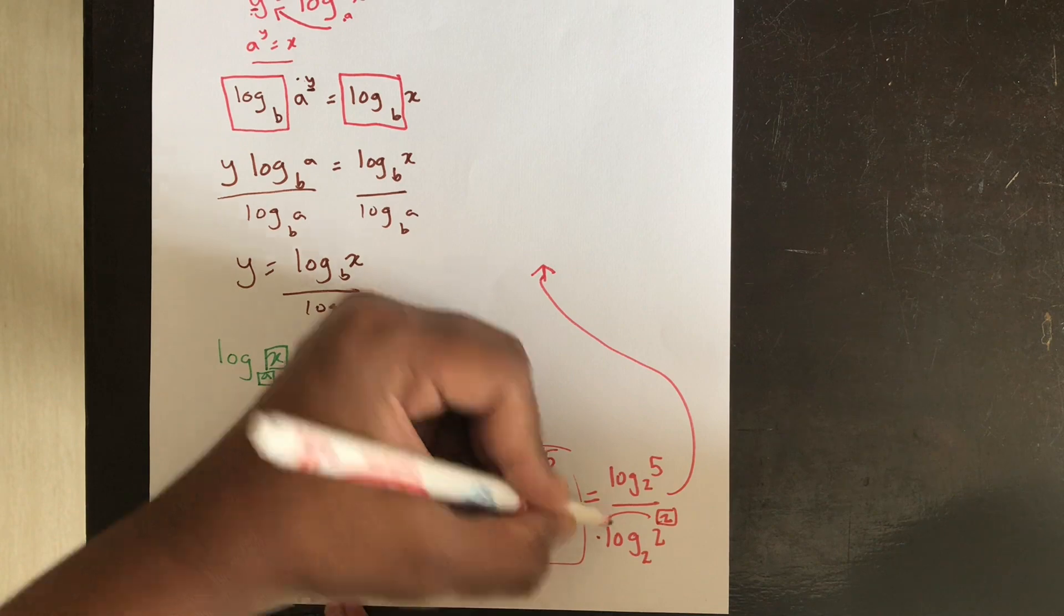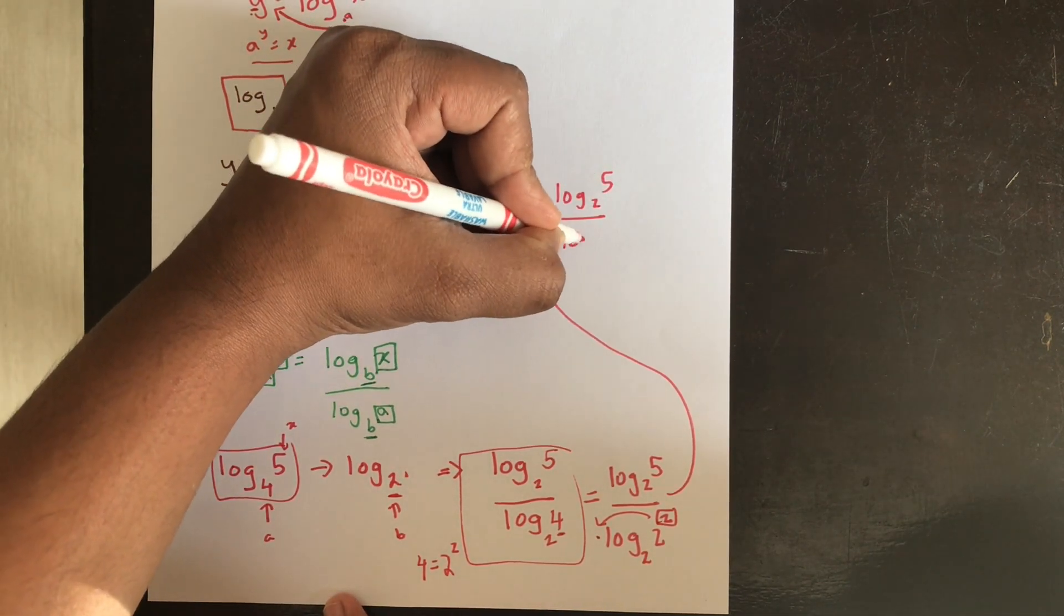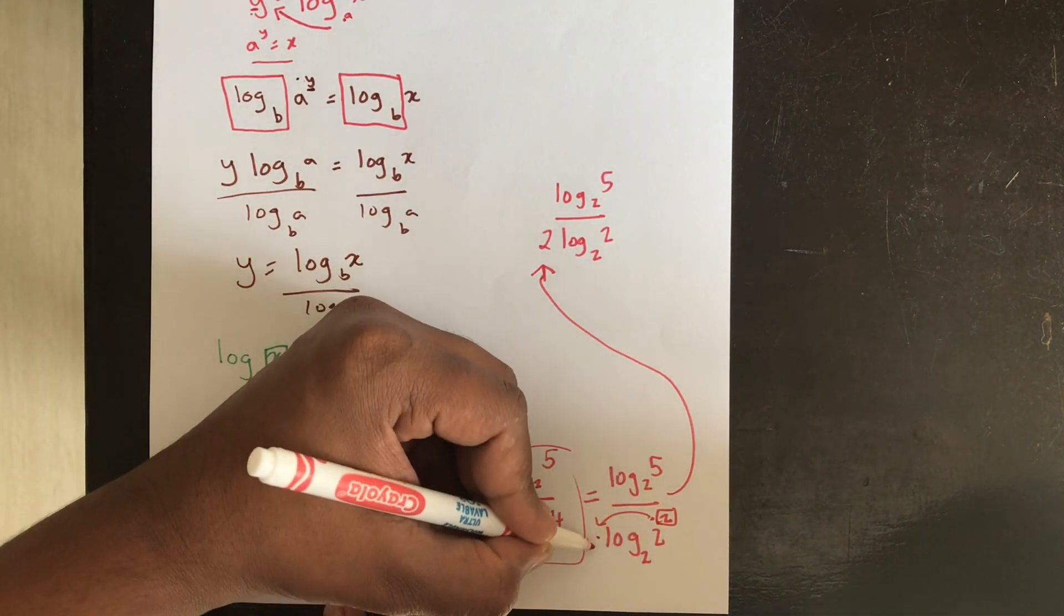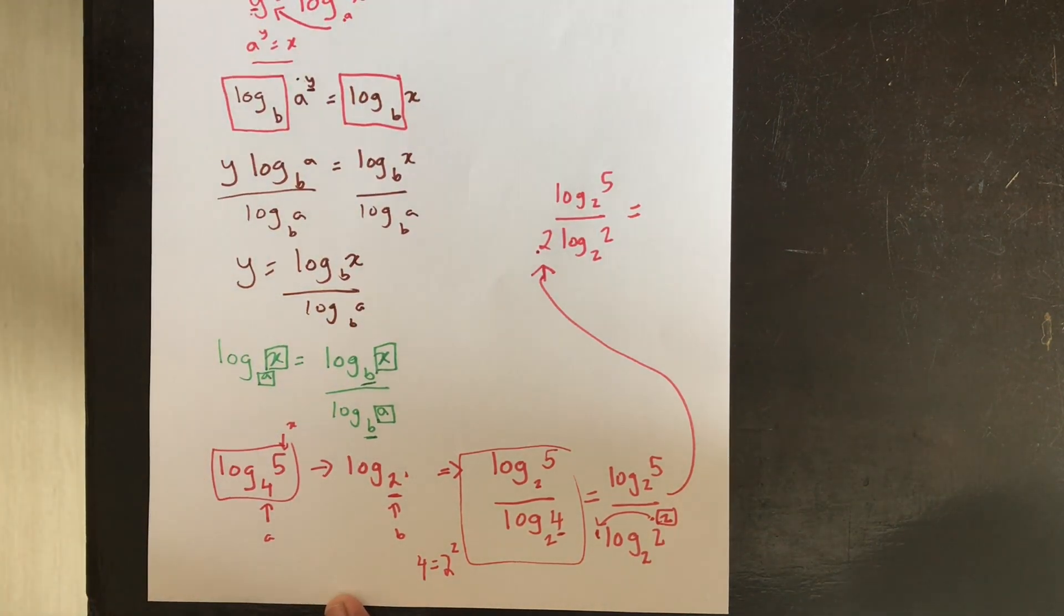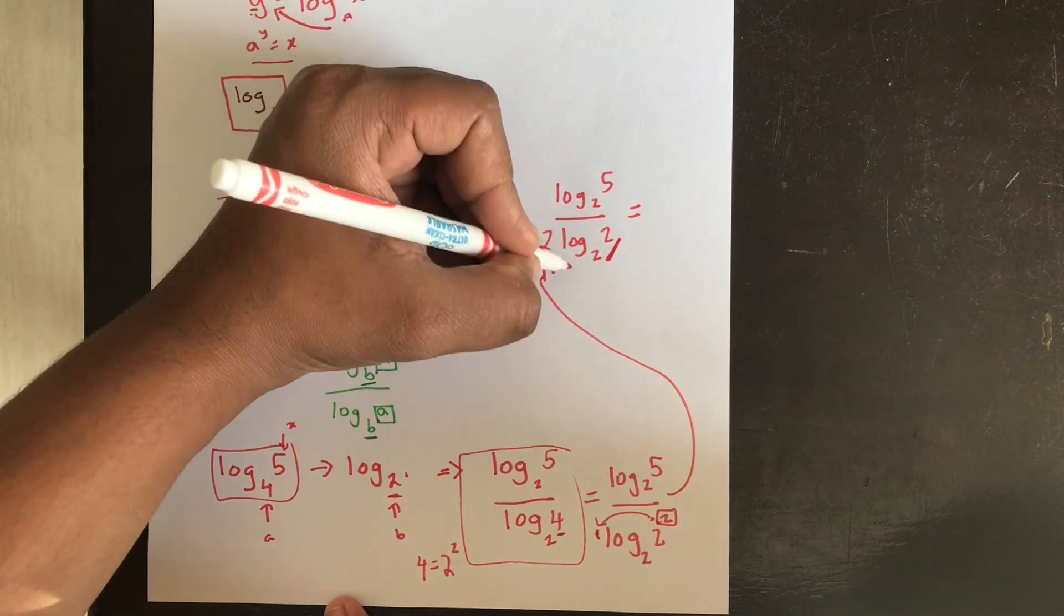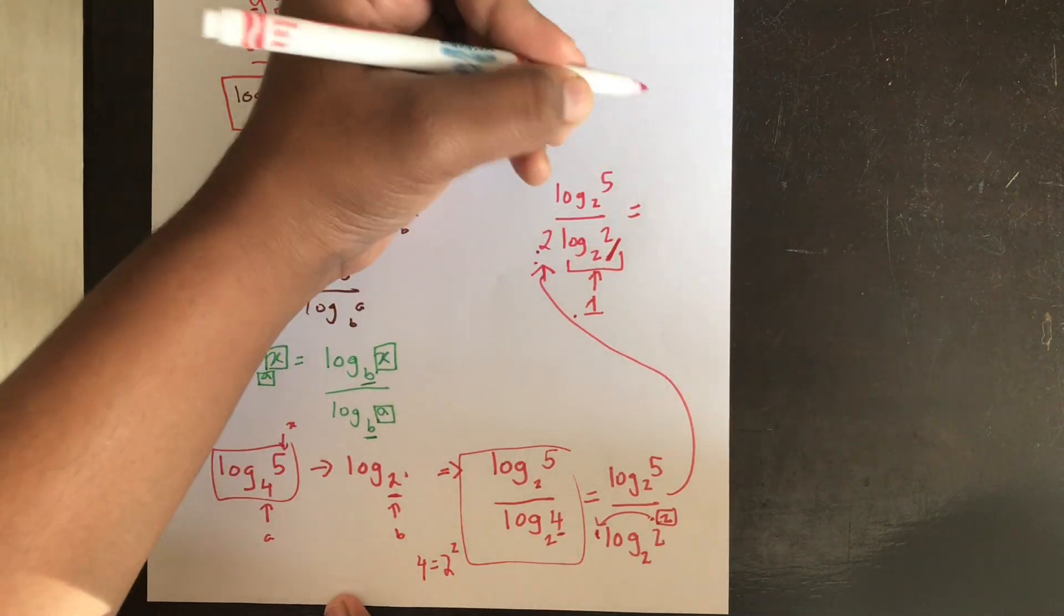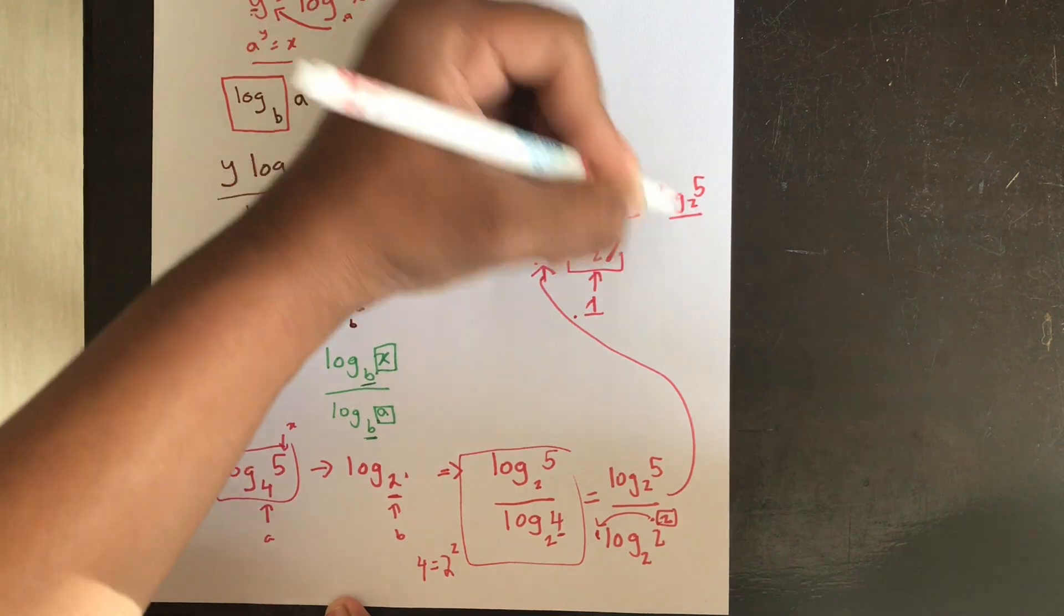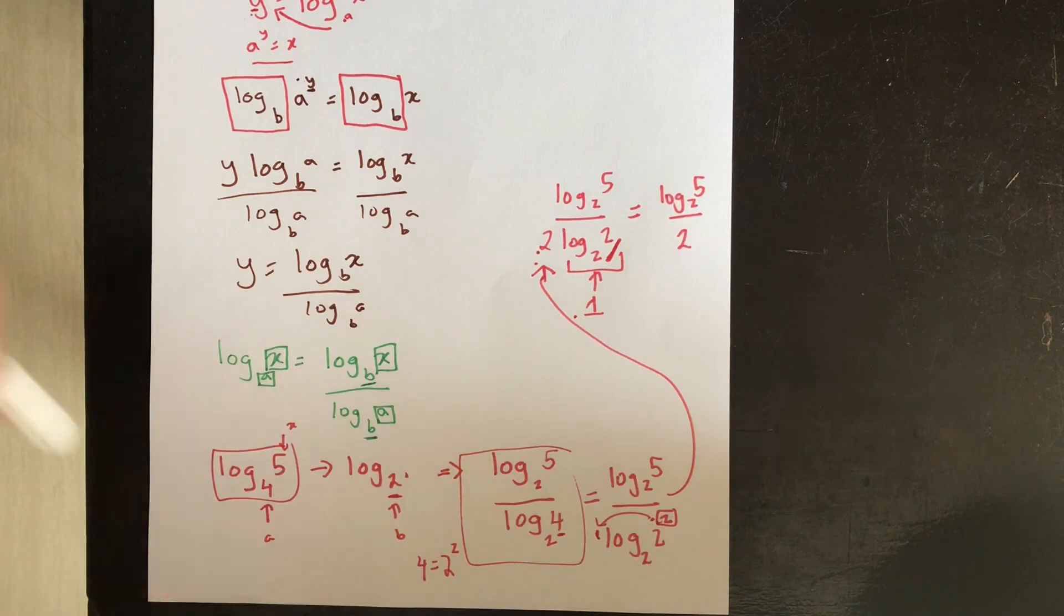So now this 2 can come down here because of the law which we had learned earlier. So this is the same as log 5 base 2 divided by 2 log 2 base 2. So I've just brought this power down here on this side. Now another rule which we had learned is if you have these 2 things are the same, your value of the log itself is actually 1. So this becomes 2 times 1. Therefore the answer is actually log 5 base 2 divided by 2.